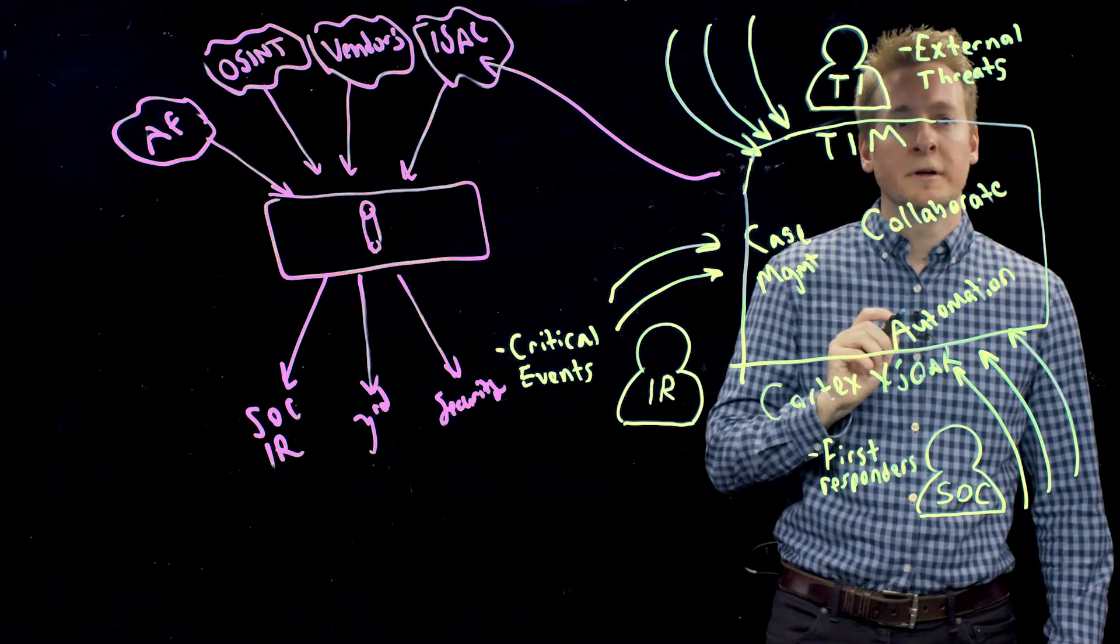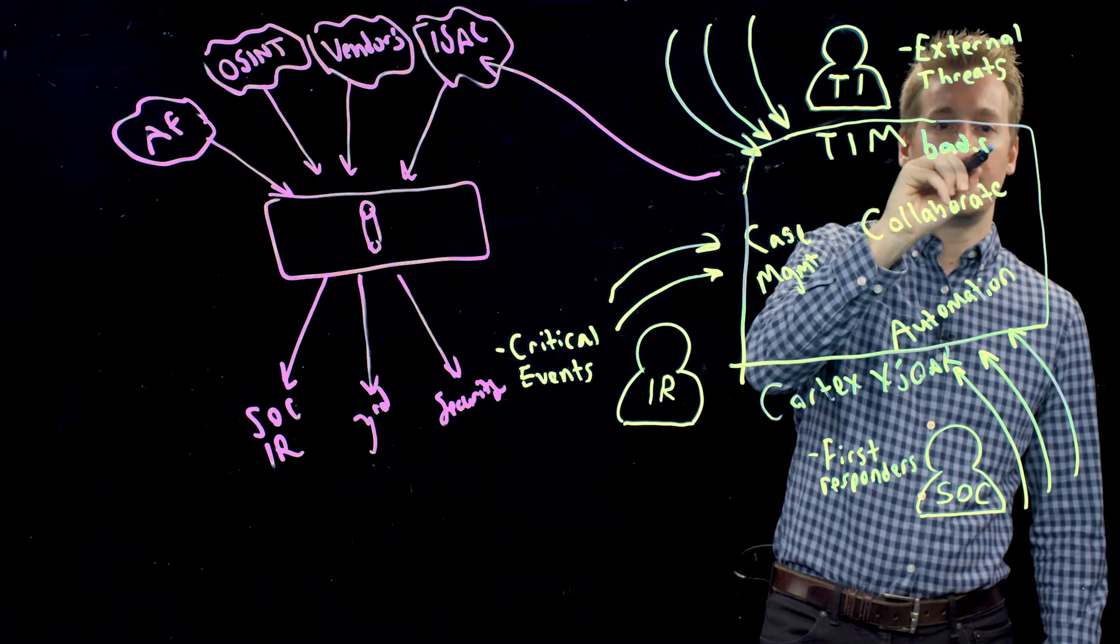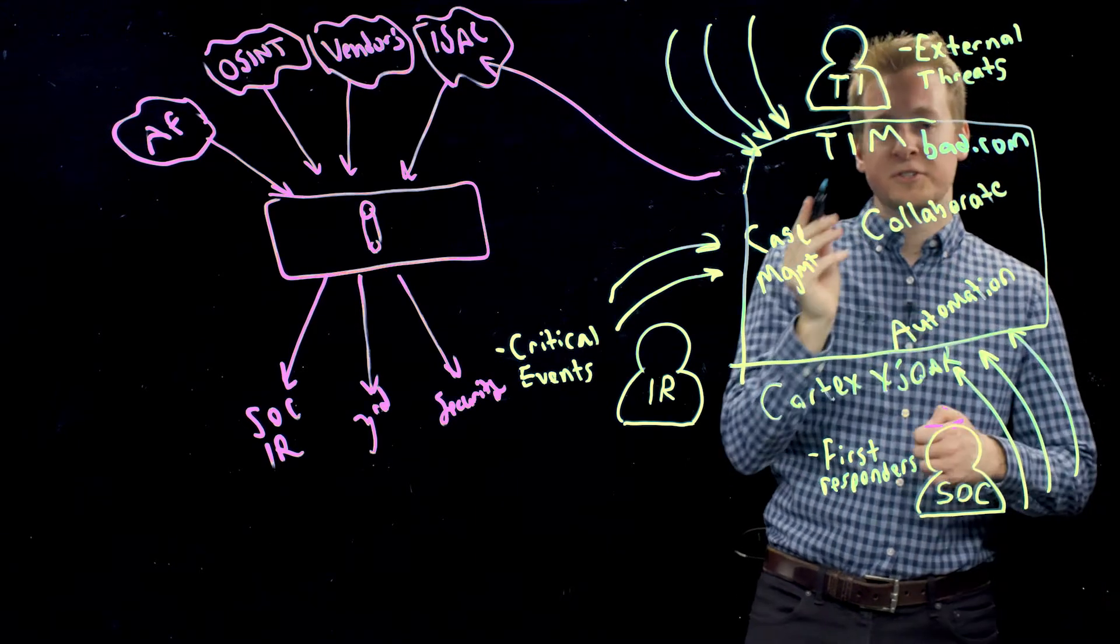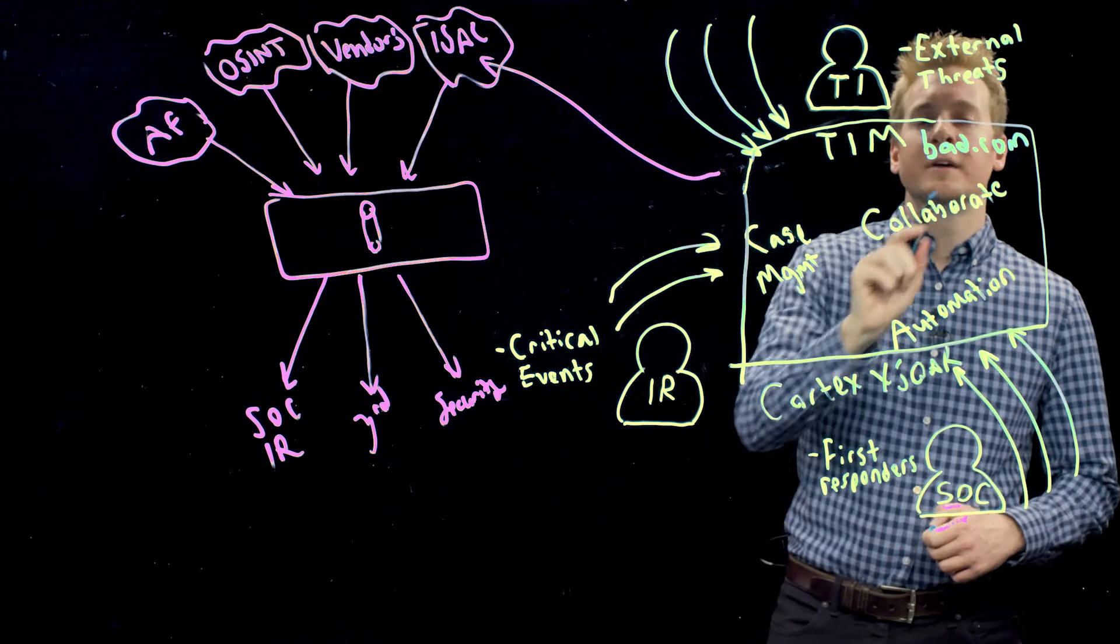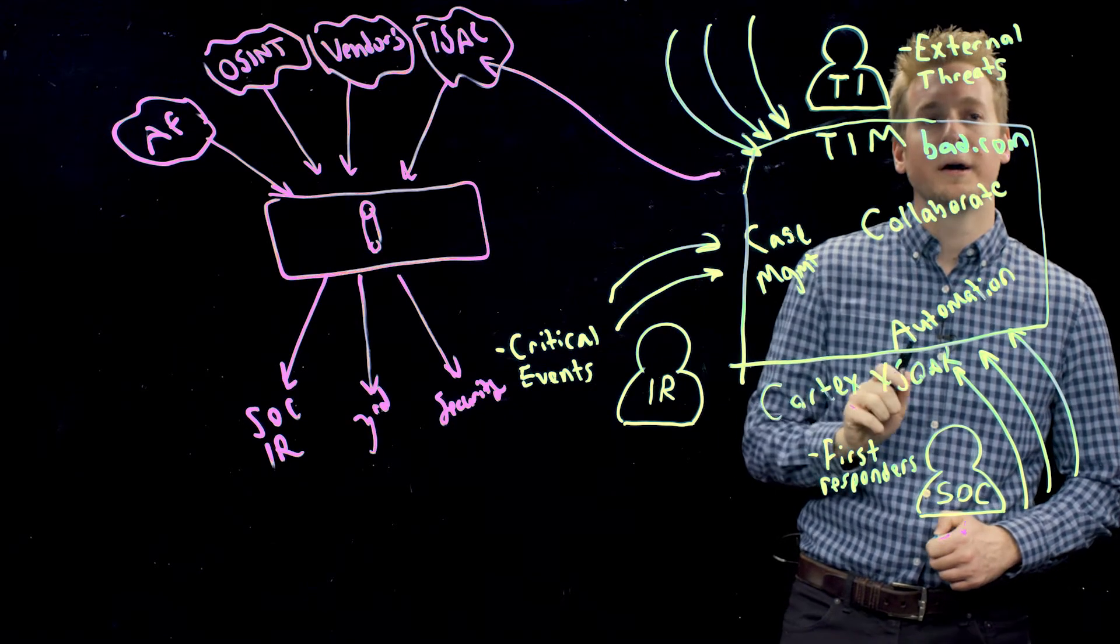Let's assume that they've done the legwork and have found that bad.com is a malicious domain. It's come from many different sources, and they've added the analysis, scoring, and context that we spoke about just now.